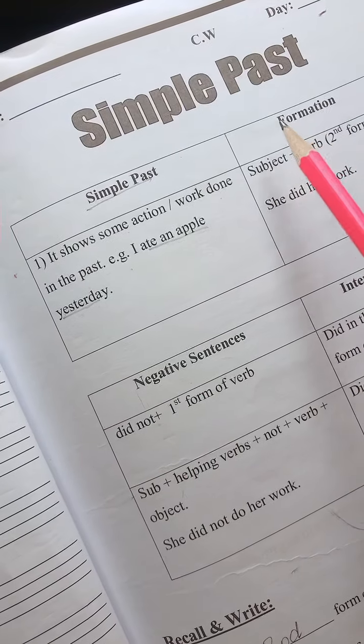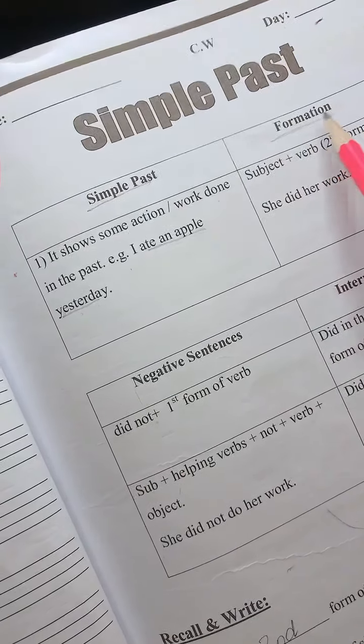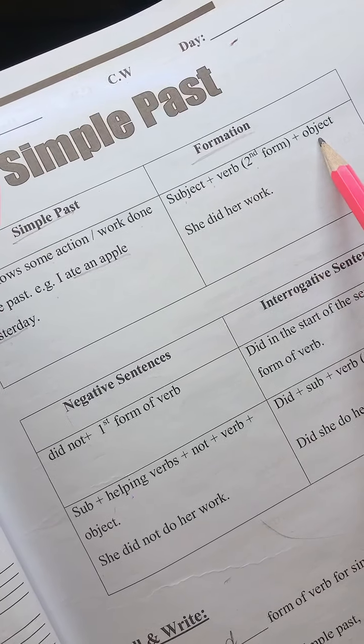How can you make a simple past tense? For every formula, you have to follow the formula. You have to use the sentence structure of the subject plus verb, second form of verb, object.